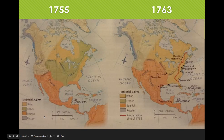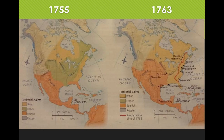Looking at territorial claims in 1755, take a look at what the British have compared to the French. Then after the war where they're defeated, by 1763 the former French territory is in British control, and Louisiana is in Spanish control. You might ask where any French control remains — San Domingo. We will talk quite a bit about San Domingo in our next unit, specifically focusing on the Haitian Revolution. So the French lose pretty much everything in this war.